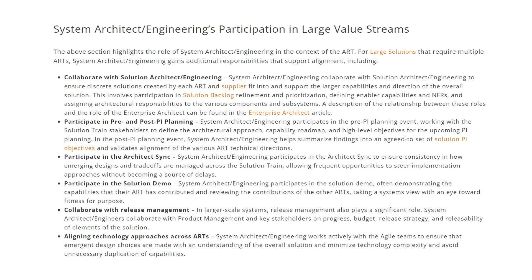The first one is to collaborate with solution architect and engineering. In the context of ART, you may not need frequent collaboration with the solution architect, but when it comes to the large solution, collaboration with solution architect and engineering is very essential. System architect and engineering collaborate with solution architect and engineering to ensure discrete solutions created by each ART and supplier fit into and support larger capabilities and directions of the overall solution.